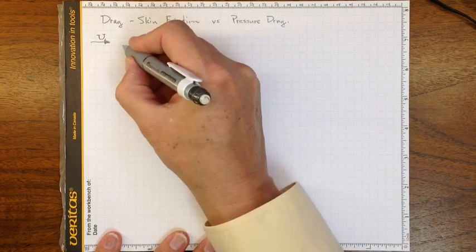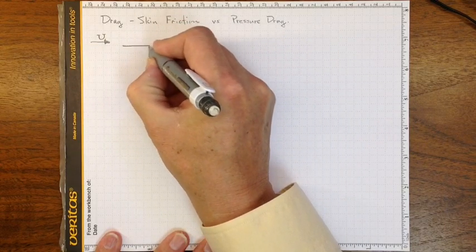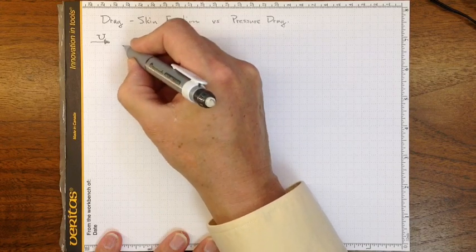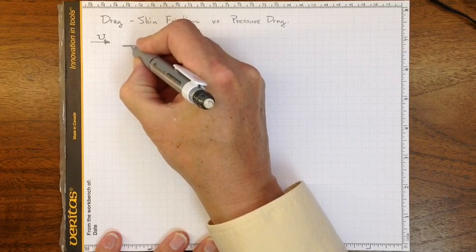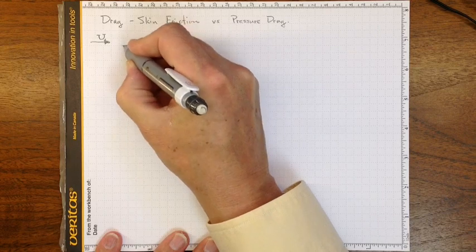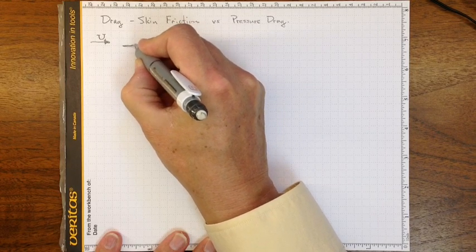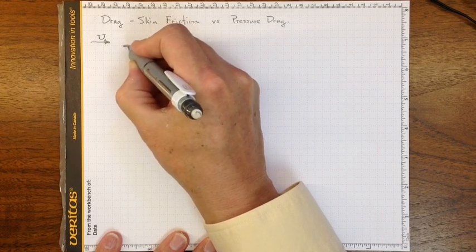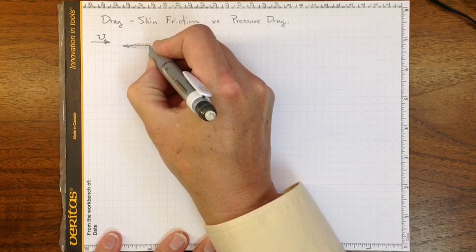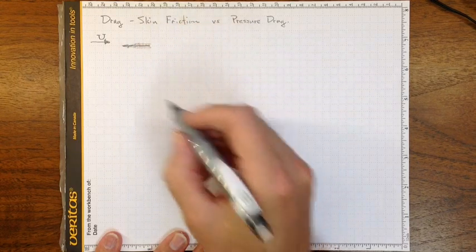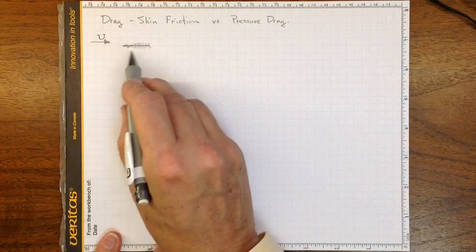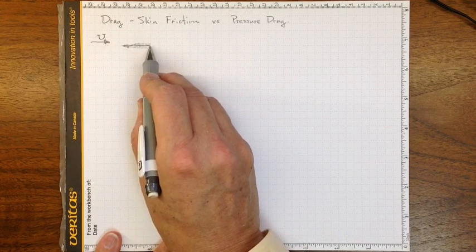There will be friction on the surface due to viscous drag, and there will be a thin boundary layer here on both edges of that piece of plywood where the airflow is slowed down because of the viscous friction,